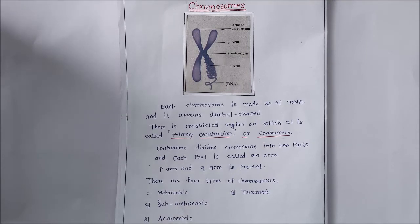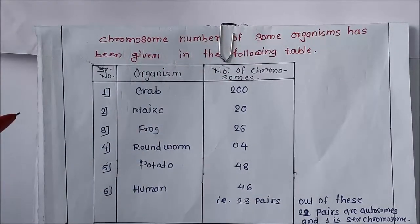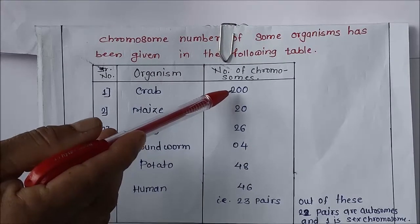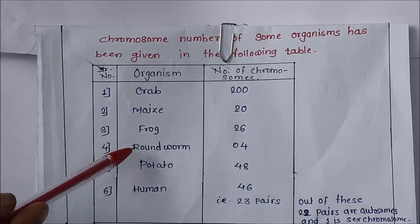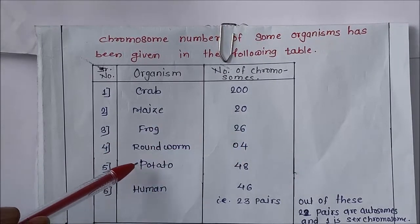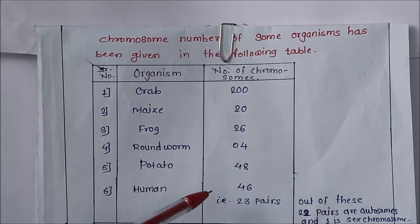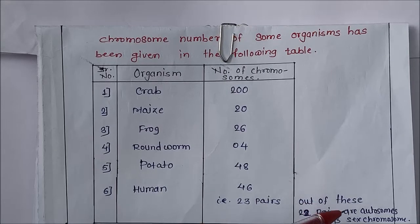The chromosome numbers of some organisms are as follows: crab has 200 chromosomes, maize has 20, frog has 26, roundworm has 4, potato has 48, and human beings have 46 chromosomes — that is 23 pairs. Out of these 23 pairs, 22 pairs are autosomes and one pair is sex chromosomes.